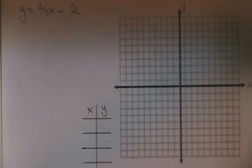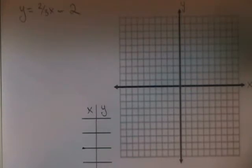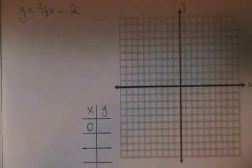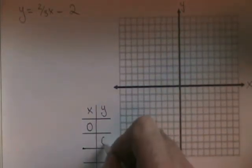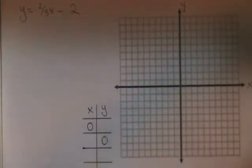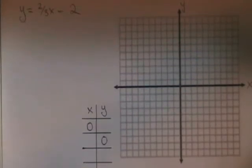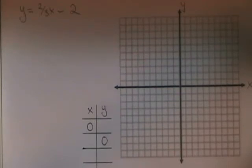We must include all intercepts, and the best way to approach this is to do what I call the zero-zero trick. We are going to find the points on the line where x equals zero and where y equals zero. These are the intercepts. Any time you have a straight line equation with both y and x in it, you can do the zero-zero trick, and it will find all intercepts.